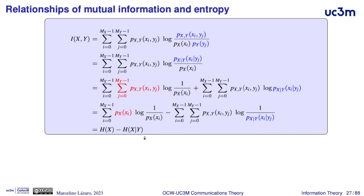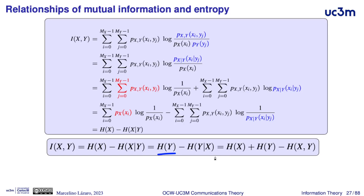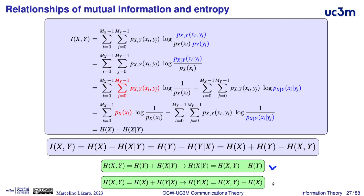Therefore, the mutual information between two random variables can be obtained as the difference between the entropy of one of them minus the conditional entropy of the same variable given the other one. By the same procedure, the mutual information also equals the entropy of y minus the entropy of y given x. Taking into account the relationships between individual, joint, and conditional entropies, it is also possible to show that the mutual information between x and y can be obtained by adding the entropy of each of the two random variables minus their joint entropy.